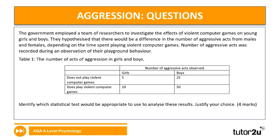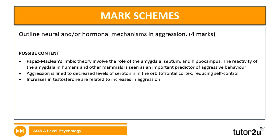Looking at the mark scheme for the first aggression four-marker — outline neural and/or hormonal mechanisms in aggression. For neural mechanisms, you can discuss the limbic system: the role of the amygdala, the hippocampus, and the septum.